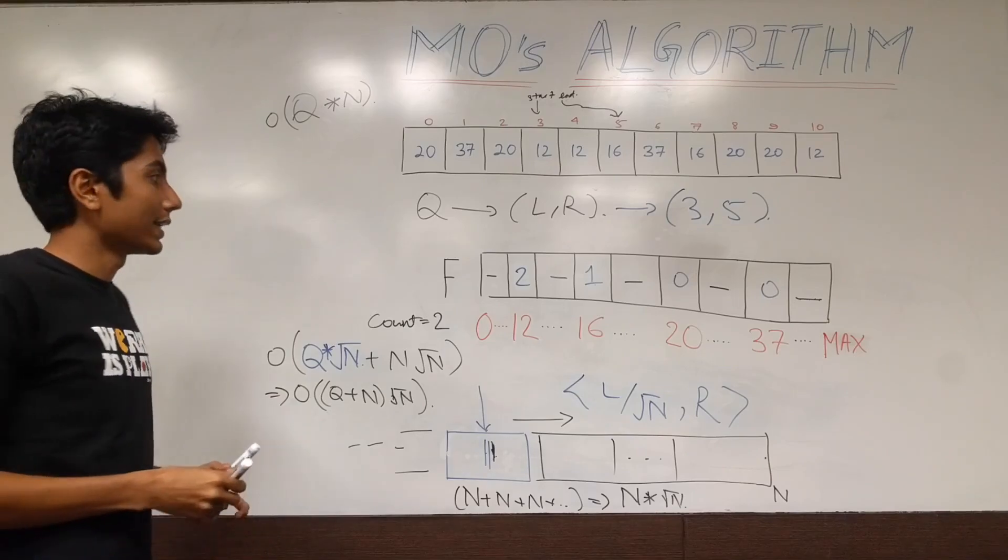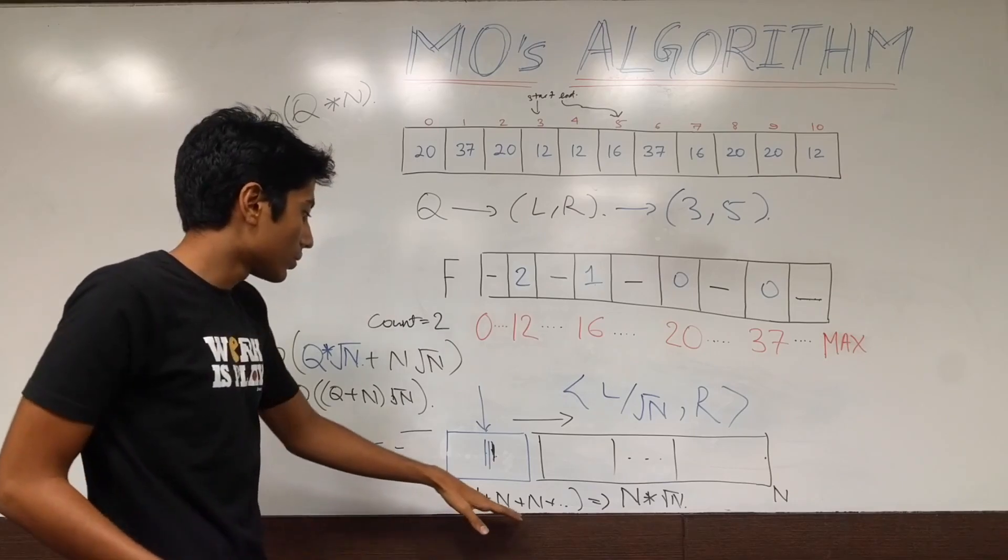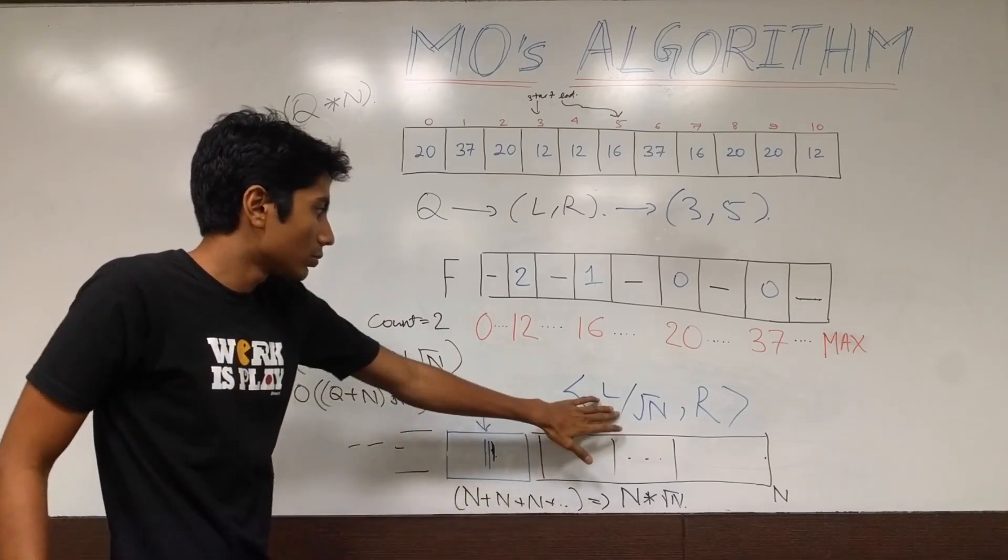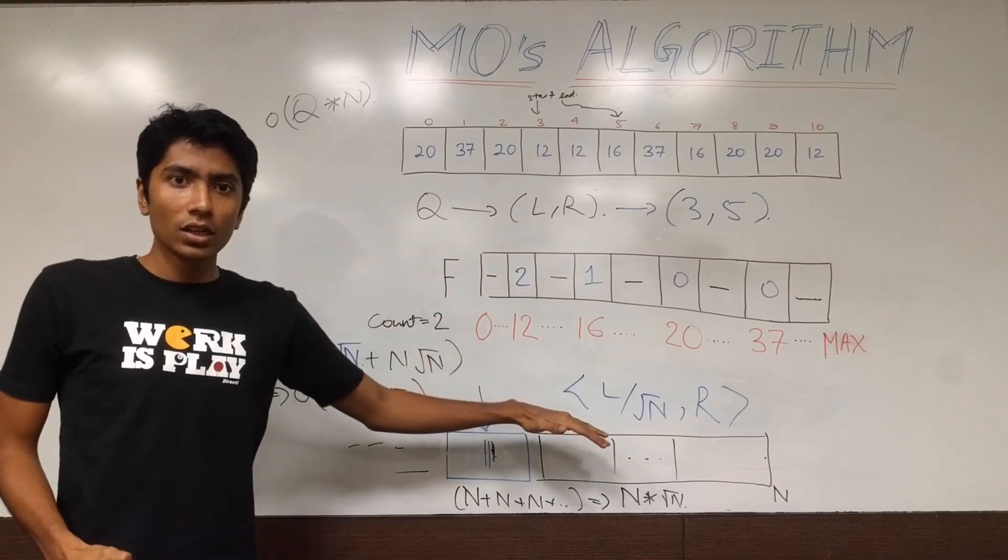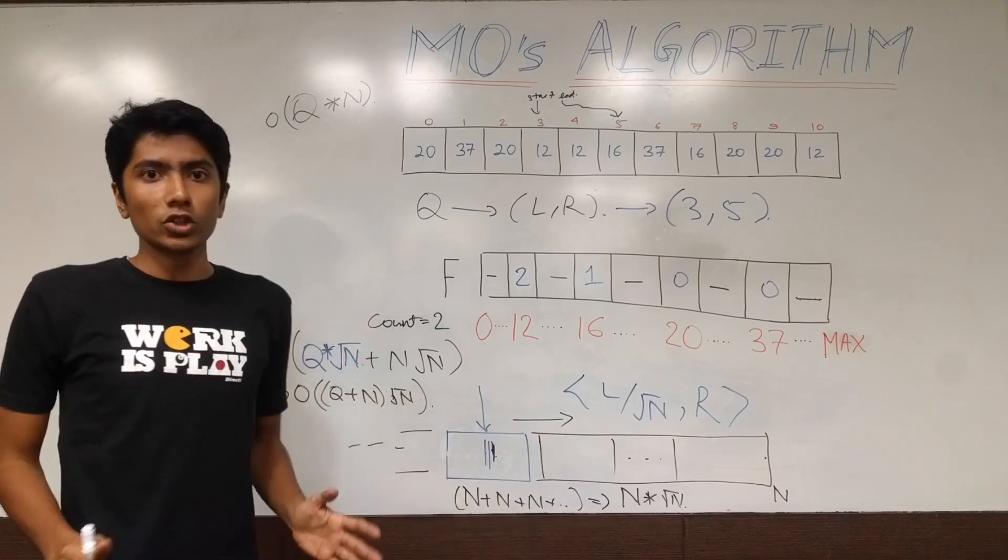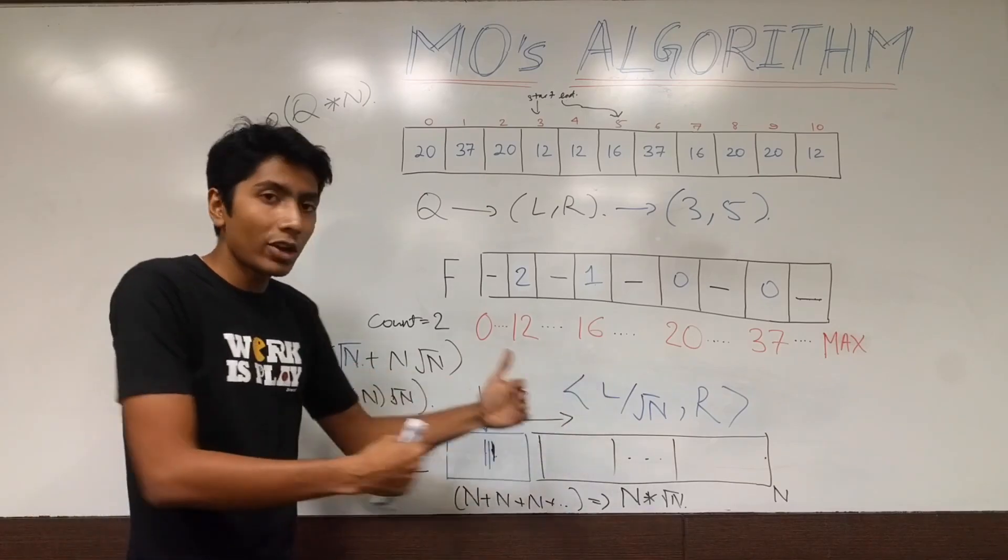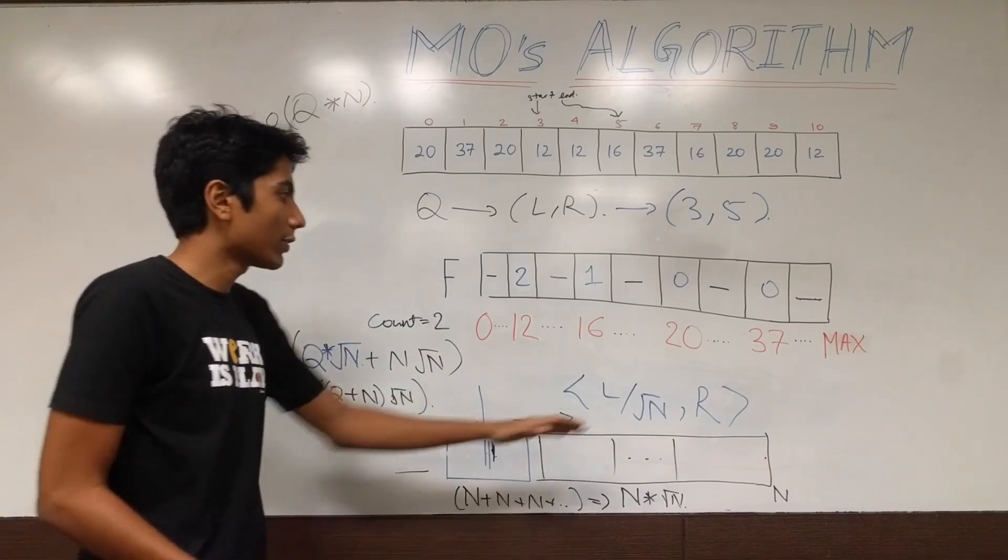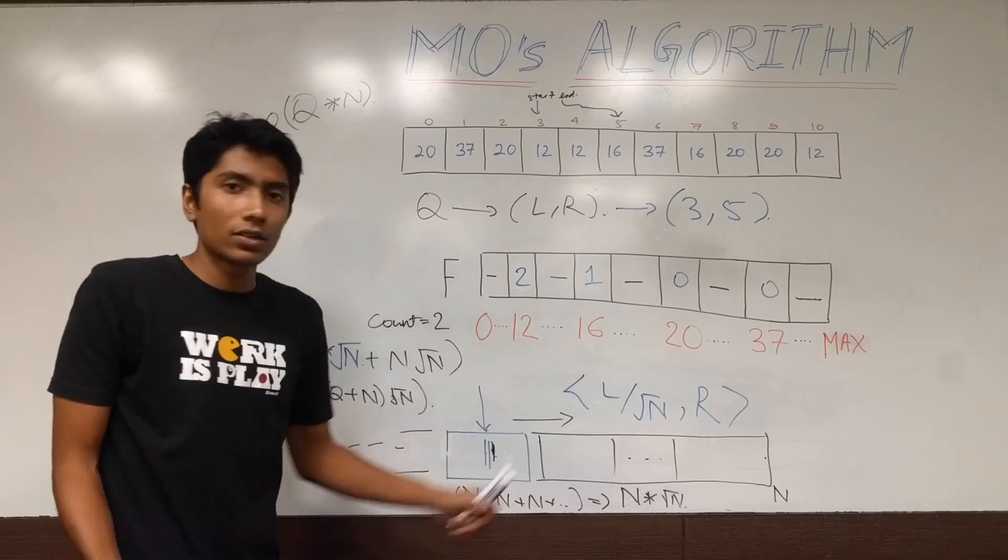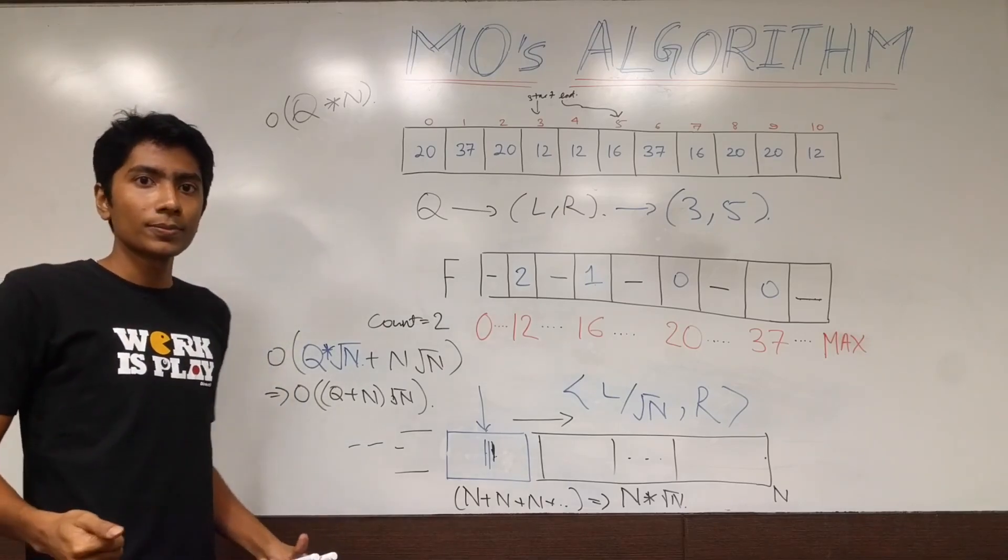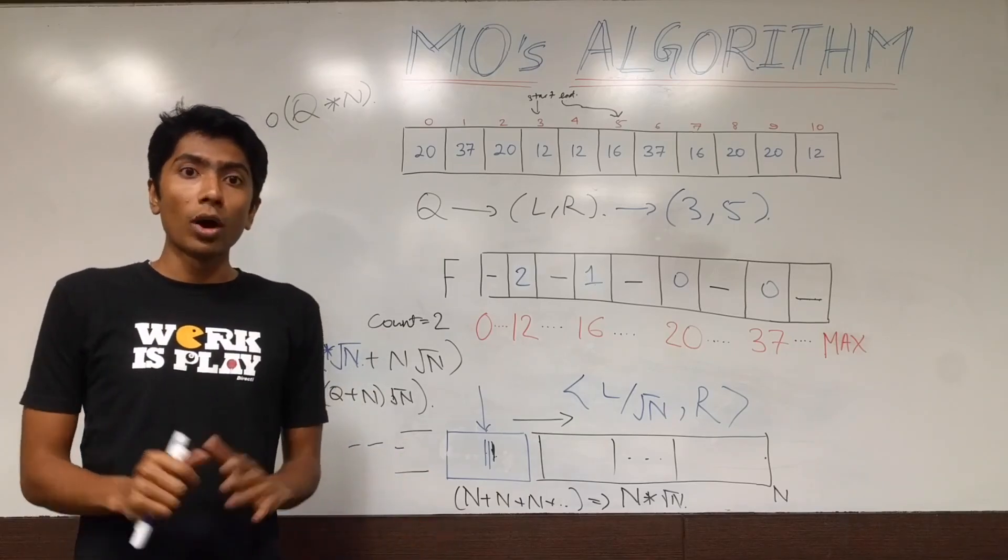Alright, by doing nothing, essentially, we just changed our way of thinking a little bit and also changed our query ordering. Now, important to notice is that any update would have created serious issues. Because, an update would have not guaranteed that our query ordering is correct. Left and right is okay, but if there's an update in between, then you can't guarantee that the query answer will be the same later also. So, Mo's algorithm only works when there are no updates.